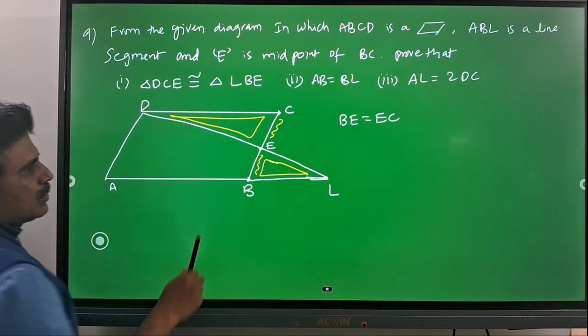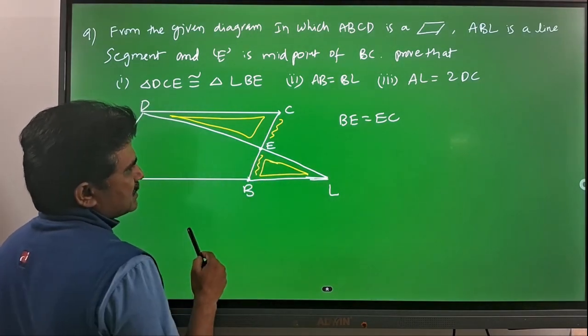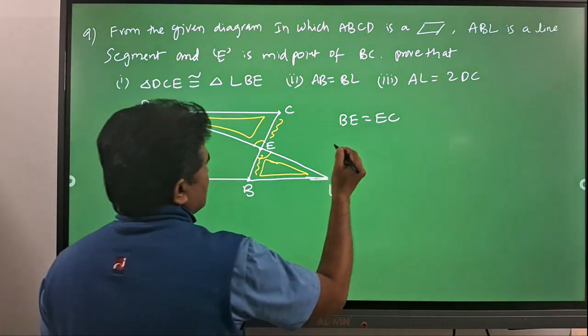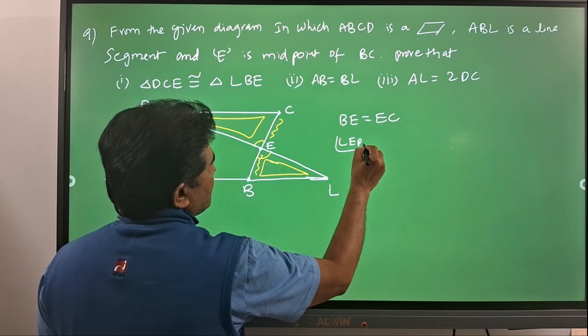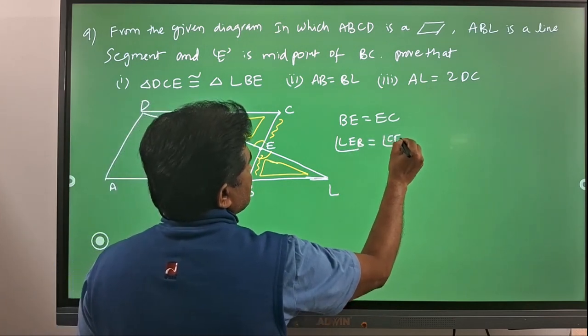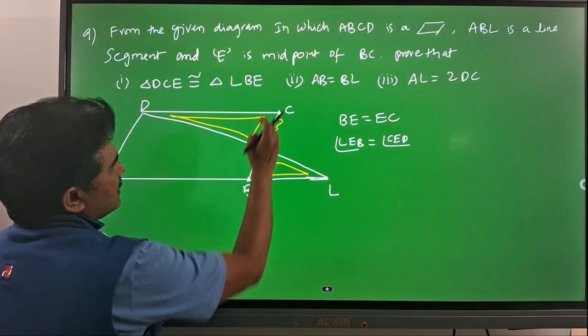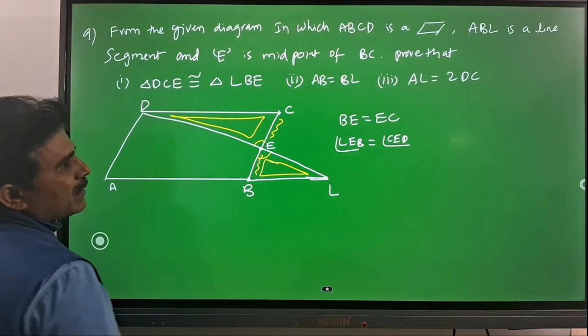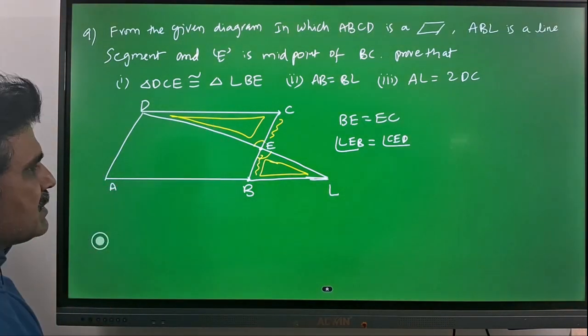One equality came, and one more: since these are opposite angles for these crossing lines, these two angles are equal. I am specifying those angles as angle LEB equals angle CED. LEB is this angle, CED is this angle. Those two are equal because at cross lines, opposite angles are equal.